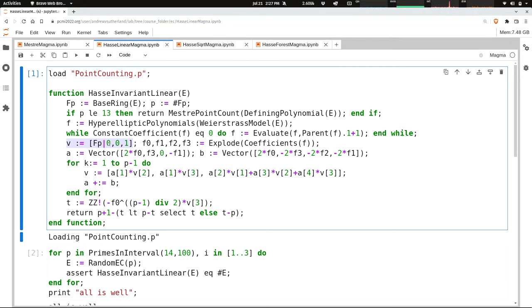Telling Magma, this is the 0 of fp, the 0 of fp, and the 1 of fp. These aren't integers. And then here, I'm just going to extract the four coefficients of f, because I want to build the matrix.